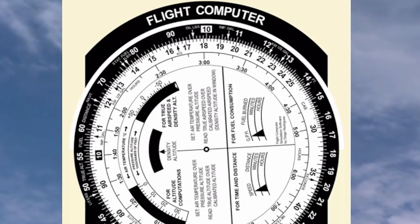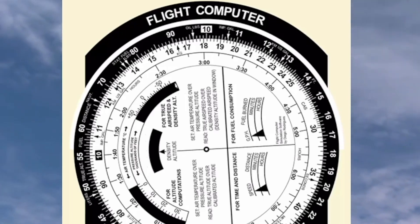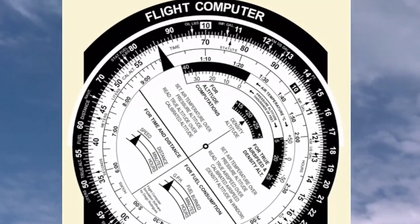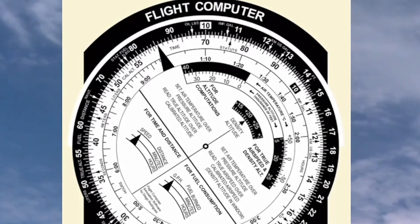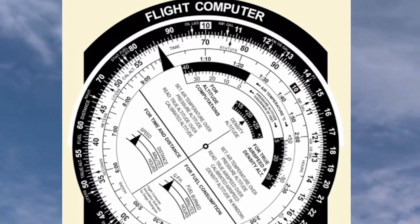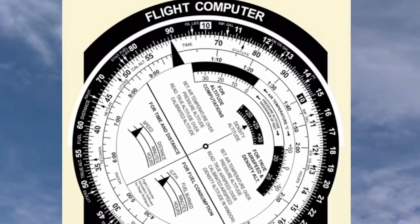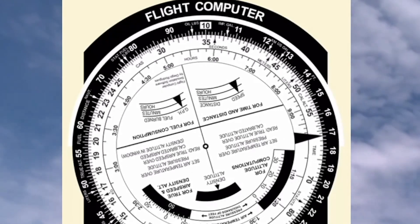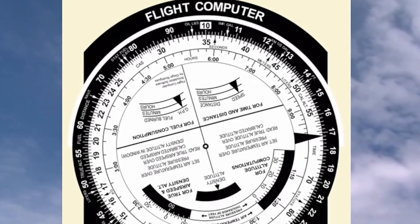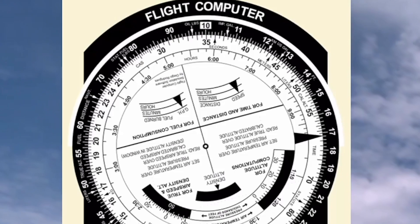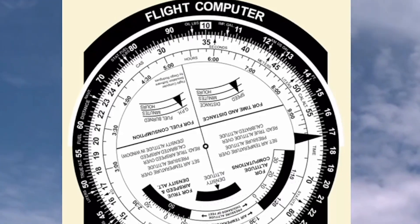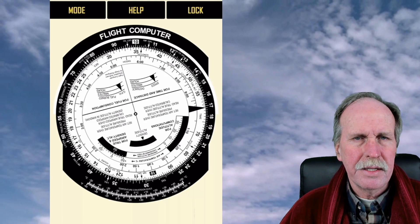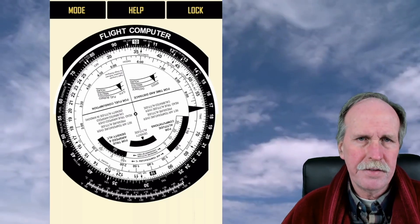To divide using this, we can easily just reverse the procedures. Take 70 and divide it by 2 — bring the 70 over to where the 2 is, and then read under the index at 12 o'clock. The answer will be 35. So that's the slide rule function of the E6B — it does multiplication and division. Now we're going to do some of the specific aviation functions.